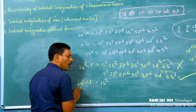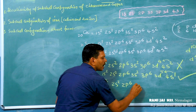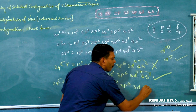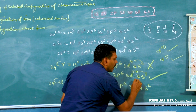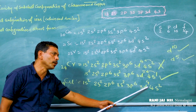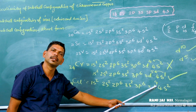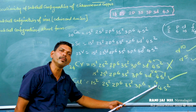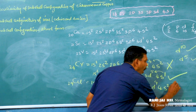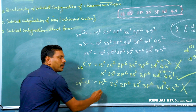For copper (Z=29), the expected configuration would be: 1s2, 2s2, 2p6, 3s2, 3p6, 3d9, 4s2. However, this is the wrong electronic configuration. The correct electronic configuration is different — children, please try to write the correct electronic configuration of copper.